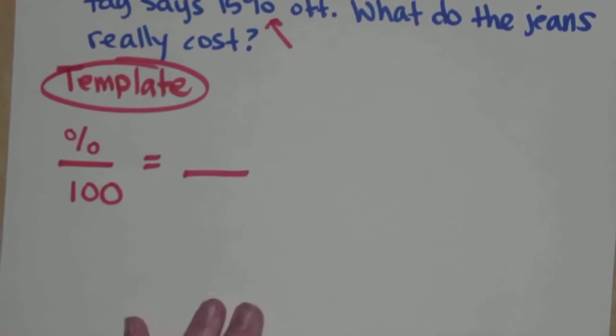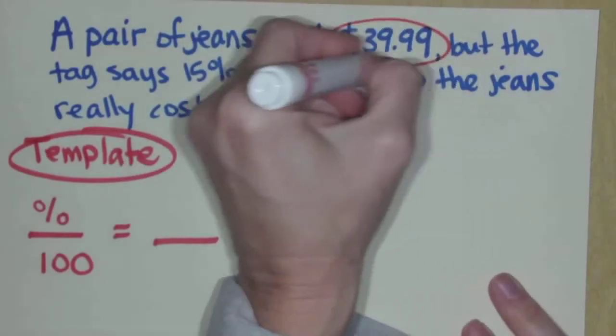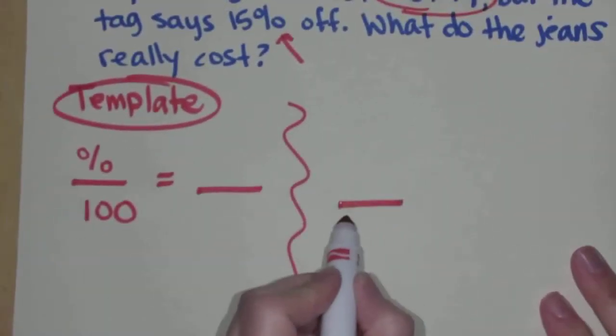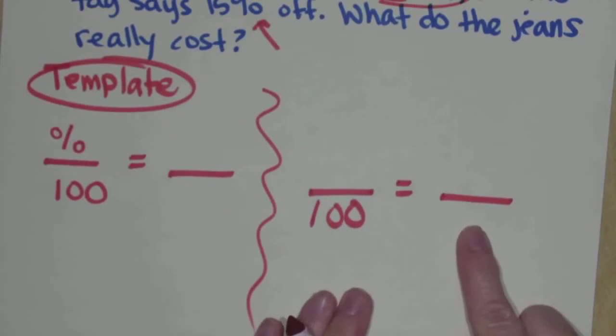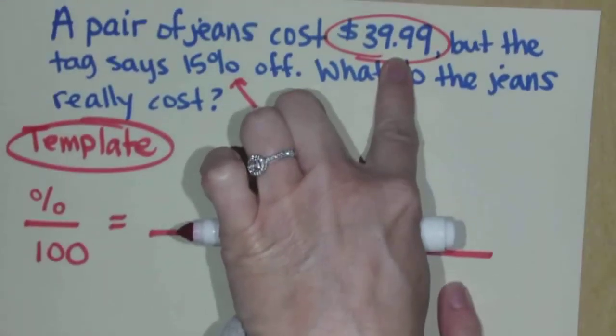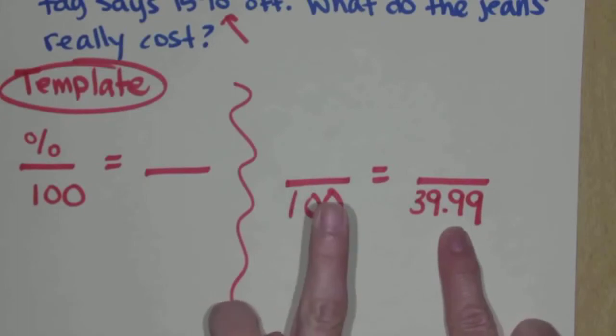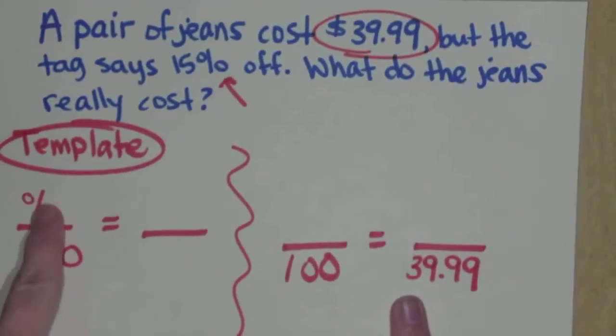Once you have that template set, watch how easy this problem becomes. A pair of jeans costs $39.99. This right here is 100% of the price. So in my template, the 100 going here, which it always does, lower left corner, you want to set up on the other side 100% of whatever you're dealing with. In this case, it's 100% of the price of the jeans. So I'm going to put the $39.99 down here next to the 100. Now, we know we're getting 15% off, so percent over 100. So 15 goes here.